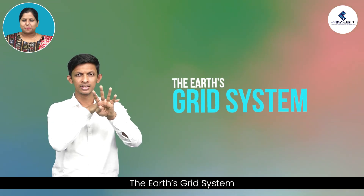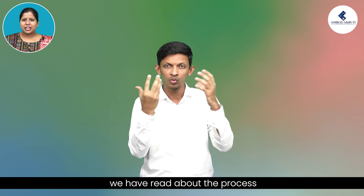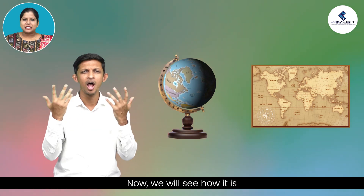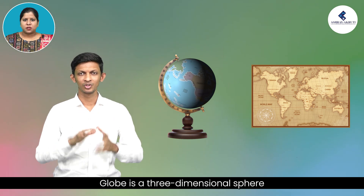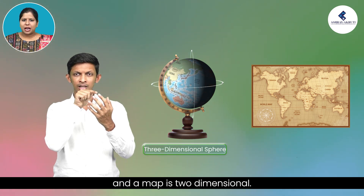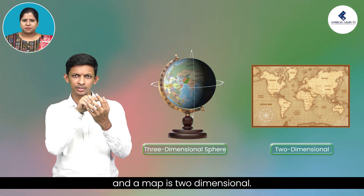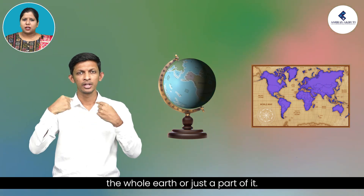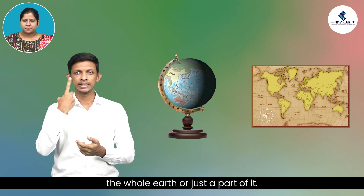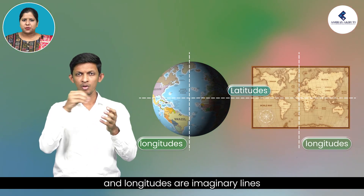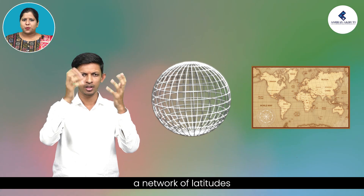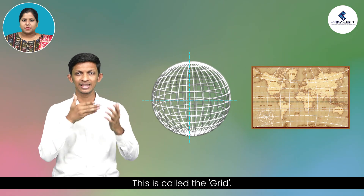The Earth's grid system. So far we have read about the process of formation of the Earth and its internal structure. Now we will see how it is shown on maps and globes. A globe is a three-dimensional sphere and a map is two-dimensional. A globe represents the whole Earth whereas a map may represent the whole Earth or just a part of it. Latitudes and longitudes are imaginary lines that run on a globe or a map. On a globe, a network of latitudes and longitudes is drawn — this is called the grid. With the help of the grid, we can locate places and learn much about them.